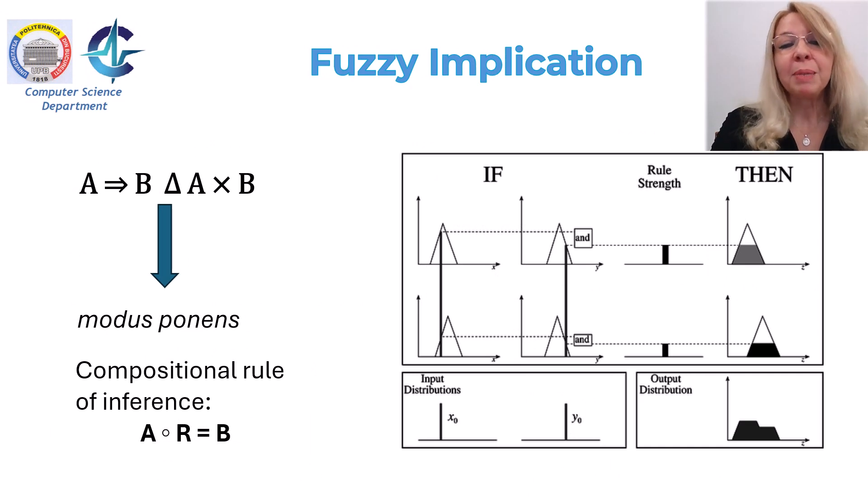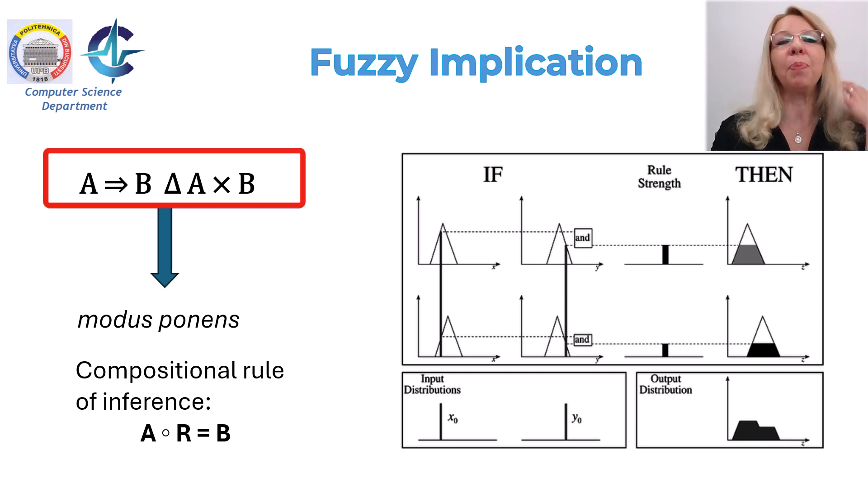The definition of implication or inference given by Zadeh and Mamdani says the following. Let A and B be two fuzzy sets, not necessarily on the same universe. The implication A implies B can be seen, and the outer product is done using an AND operator. This outer product applies the AND operation to each element of the Cartesian product of the two arguments.